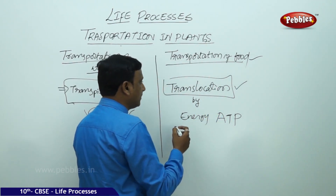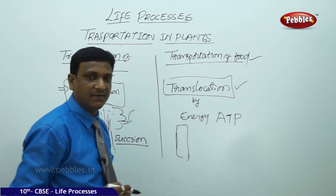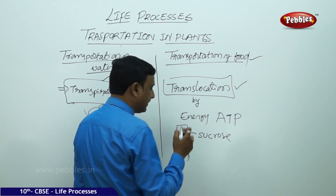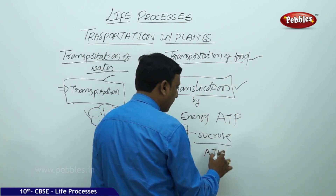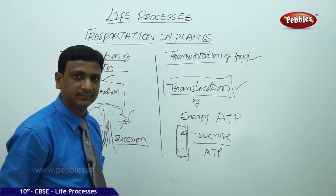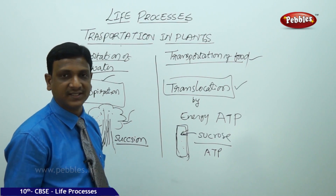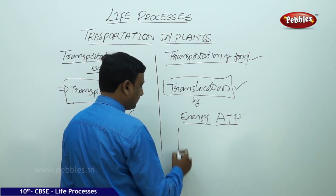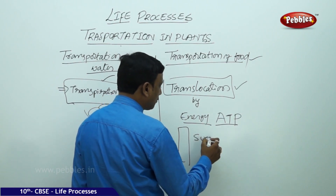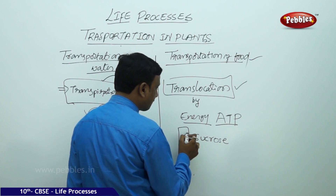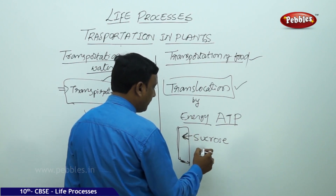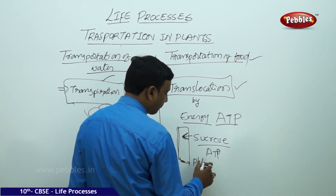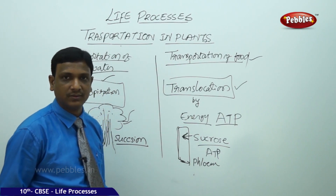How does ATP help? In the part of the plant where pressure needs to be created, sucrose is pumped into that particular area using ATP. Once sucrose is injected into those particular cells, it creates more pressure compared to other cells. The energy in the form of ATP is useful for translocation. Sucrose is sent into the phloem tissue using ATP molecules, and this sucrose mobilized into the phloem tissue creates osmotic pressure.